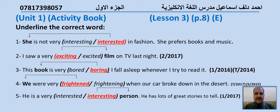Number five: He is a very interested/interesting person. He has lots of great stories to tell. الاختيار الصحيح: interesting اسم الفاعل، لأنه يصف الشخص الذي سبب الشعور بالاستمتاع. صارت الجملة: He is a very interesting person. He has lots of great stories to tell. وجاءت بالدور الأول 2017.